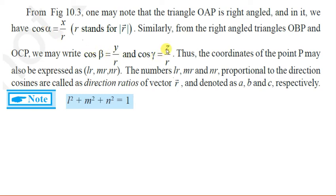So the coordinates of point x, y, z can be written as lr, mr, nr. These numbers lr, mr, nr are proportional to the direction cosines l, m, n. These are called direction ratios of vector r. And these direction ratios are denoted by a, b, c. This is the general notation.